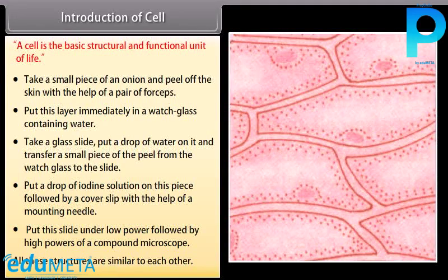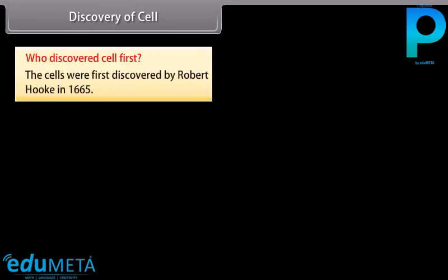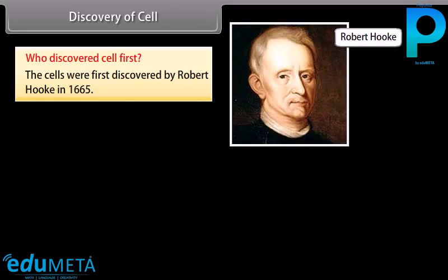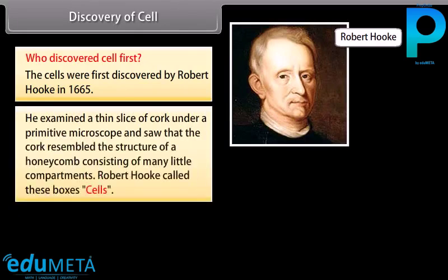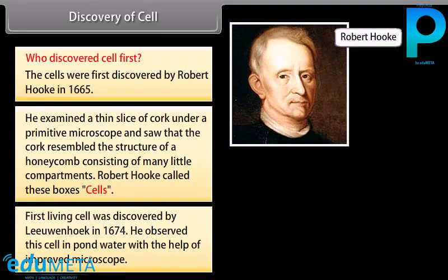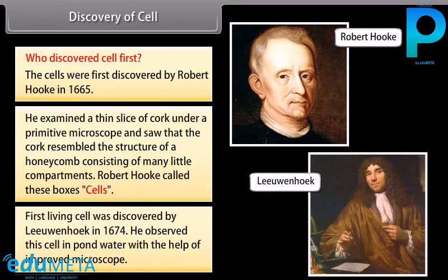Discovery of cell: The cells were first discovered by Robert Hooke in 1665. He examined a thin slice of cork under a primitive microscope and saw that it resembled the structure of a honeycomb consisting of many little compartments. Robert Hooke called these boxes 'cells.' The first living cell was discovered by Leeuwenhoek in 1674, who observed it in pond water with the help of an improved microscope.